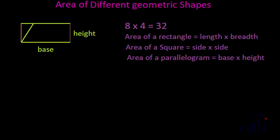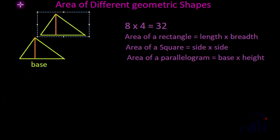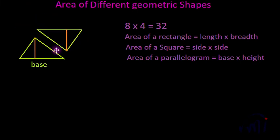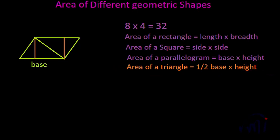Now let's find the formula for the area of a triangle. This is the base of the triangle, and if I draw a perpendicular from the opposite vertex to the base, that is the height. I am going to cut this triangle, copy it, flip it vertically, flip it horizontally, and join it — and it gets converted into a parallelogram. The area of that parallelogram equals two such triangles, so the area of a triangle equals ½ × base × height.